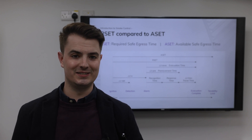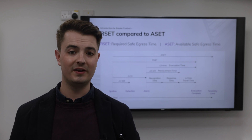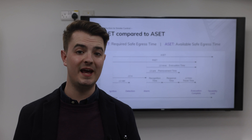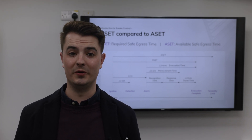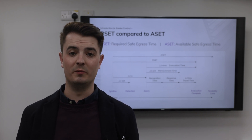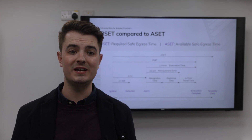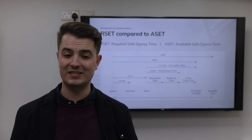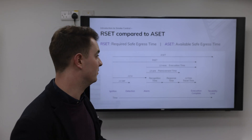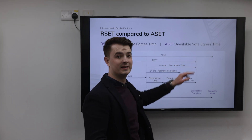Now that the ASET is theoretically calculated, the RSET is the essential remaining part of the equation. We'll now look at the Required Safe Egress Time — the RSET — in order to determine exit strategy safety for the building and compare the two results. The required safe escape time is the amount of time that people will take to leave the building. Our reason for comparing RSET with ASET is to make sure it always takes less time for people to evacuate (RSET) than it will for the escape routes to become untenable, so that ASET is longer than RSET, as shown in the diagram.